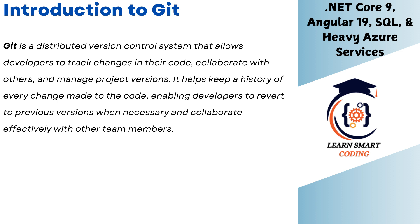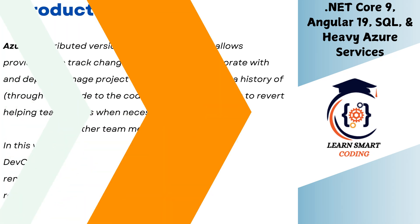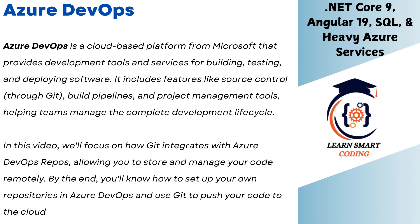Before we dive into Azure DevOps, first of all — what is Git? Git is a distributed version control system that allows developers to track changes in their code, collaborate with others, and manage project versions. It keeps a history of every change you make to the code, enabling developers to revert to previous versions when necessary. Azure DevOps is a cloud-based platform from Microsoft that provides development tools and services for building, testing, and deploying software, including source control, build pipelines, and project management tools.